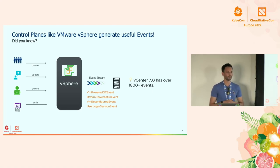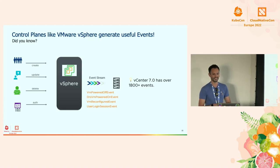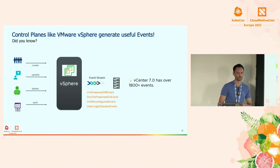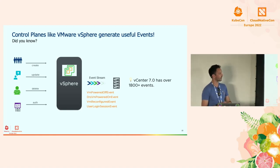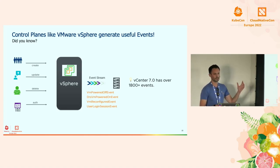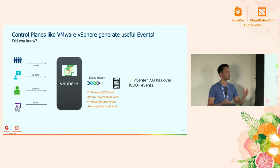1,800 events is a lot — starting from power on, power off events, DRS-related events, configuration events, login events, backup events, you name it. This list is huge. My colleague William Lam has a GitHub page where he tracks all these different events available for use in different vSphere and vCenter versions.